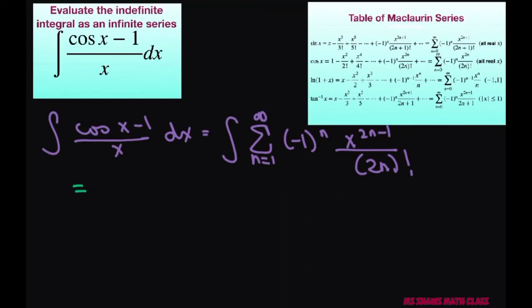So this is going to give me, when you do this dx, a constant. So let's put the c first plus the sum n equals 1 to infinity. When you integrate this you're just going to get x to the power of 2n divided by 2n, and then we're still left with 2n factorial in our denominator.